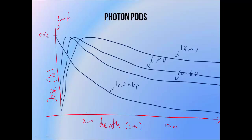The first key feature is surface dose. The kV beam deposits its maximum dose right near the skin surface, whereas a cobalt-60 beam, which is quite a low megavoltage energy beam, only deposits about 30% of its dose at the surface. 6 MV beams deposit about 15%, and 18 MV beams deposit about 10% of their dose at the surface. The majority of surface dose in these high beam energies is due to electron contamination from the treatment head.